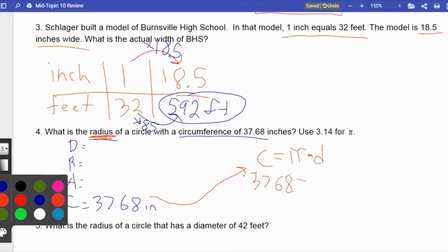37.68 is equal to pi times the diameter. Well, how do I figure out what the diameter is? Well, to figure out what the diameter is, I need to get diameter all by itself.